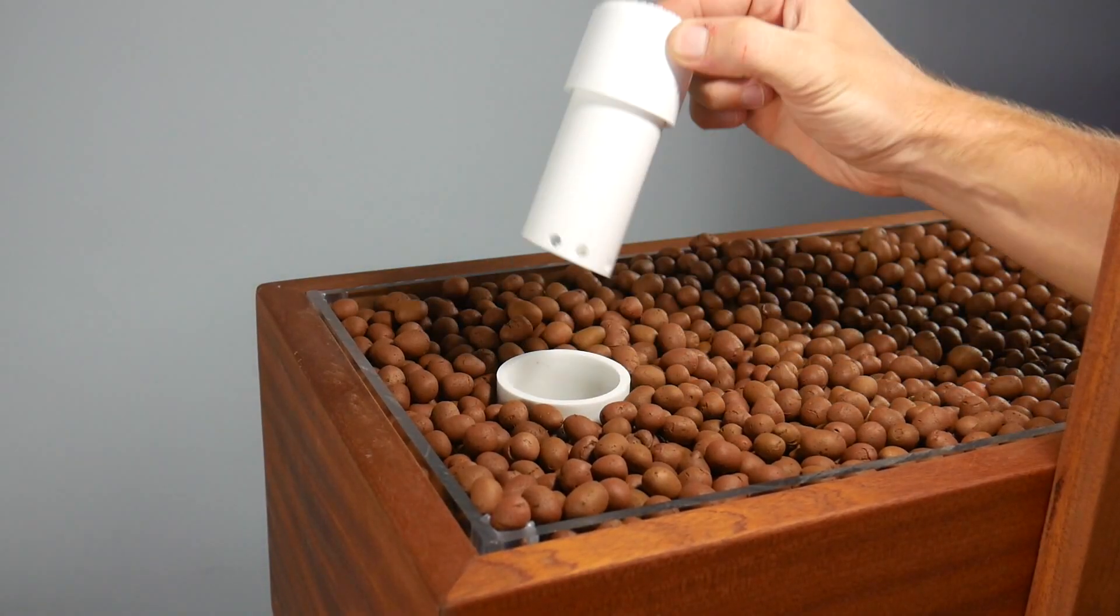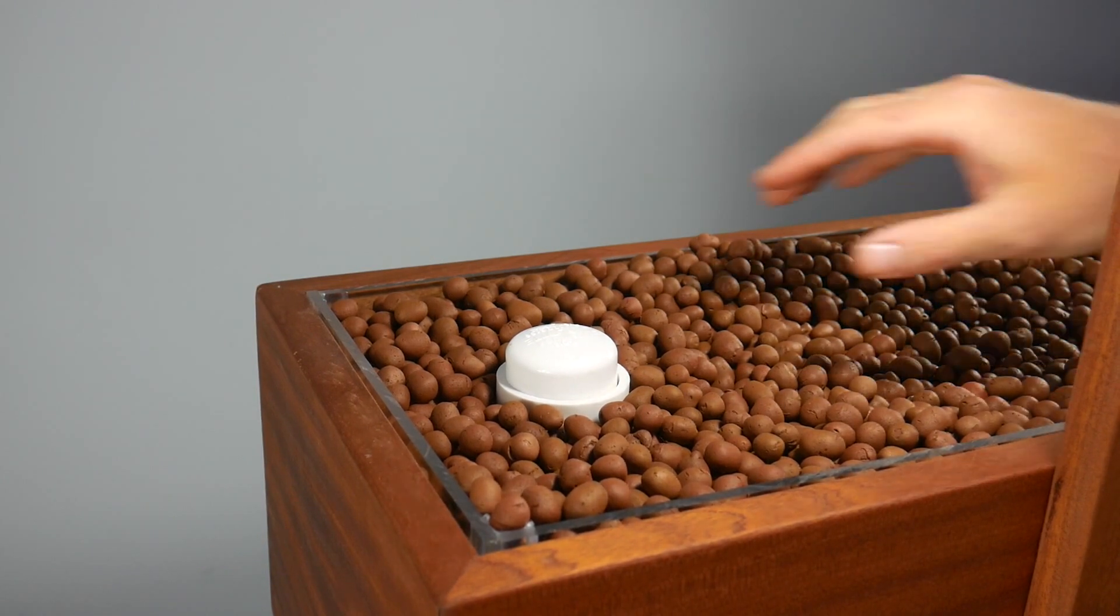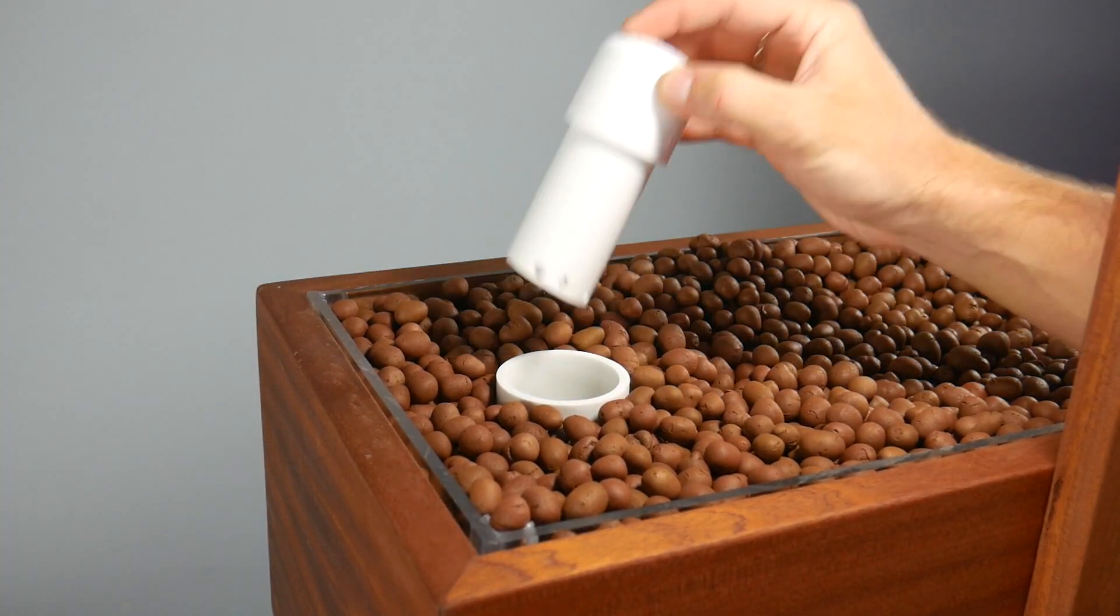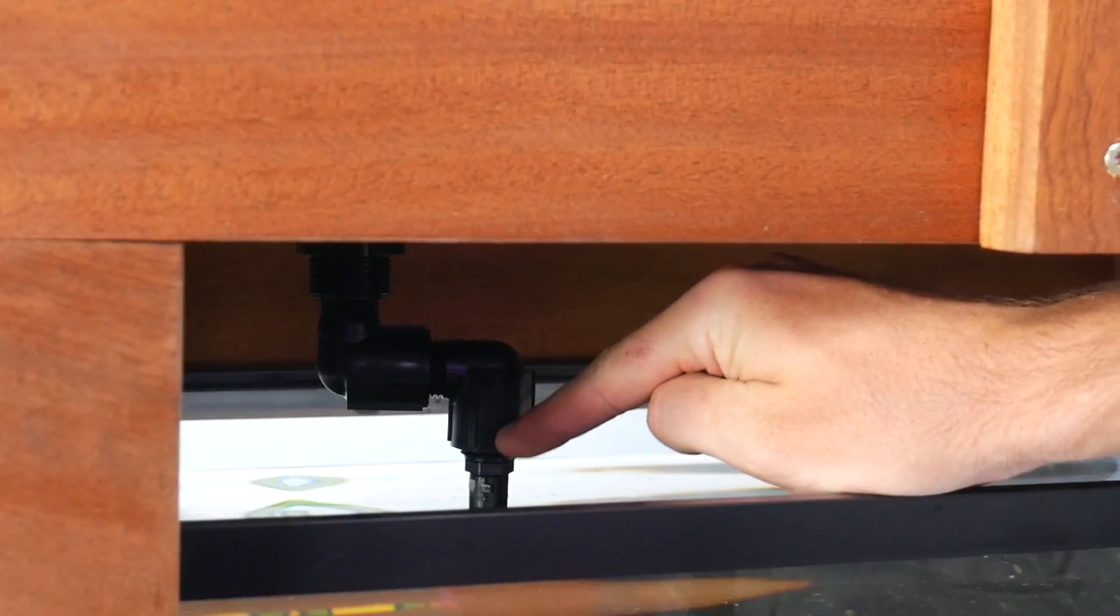This is your bell siphon and this is your bell. This controls the fill and drain system in your aquaponics system. You want to make sure that this is always inside of this container. This is the outflow for your bell siphon.